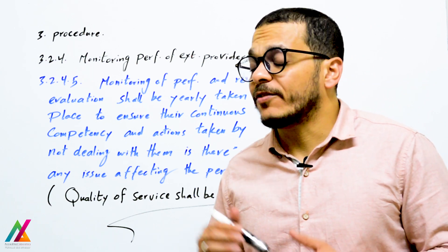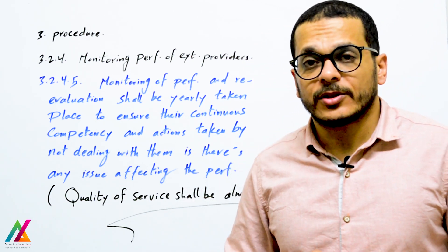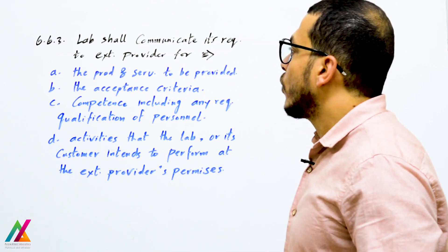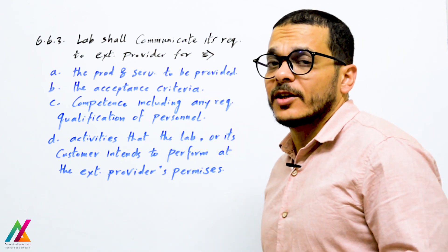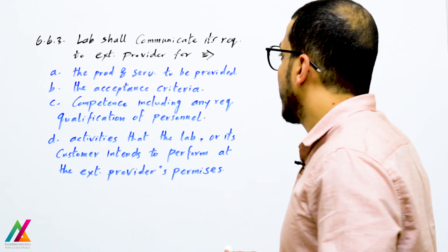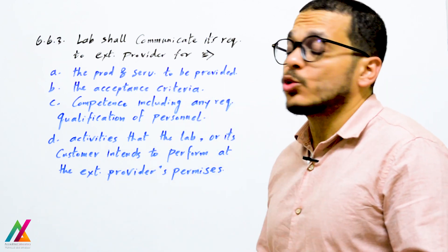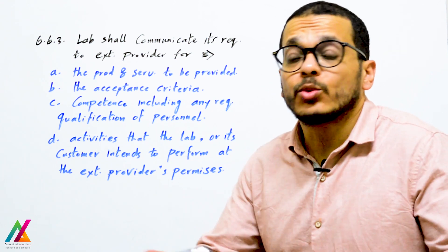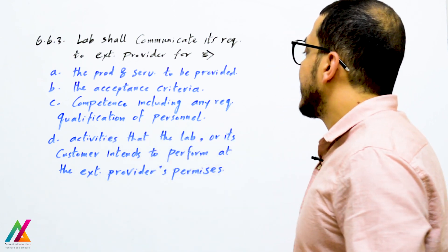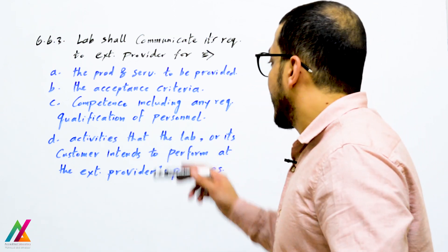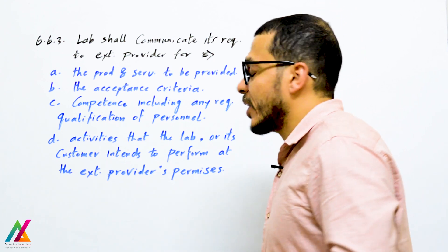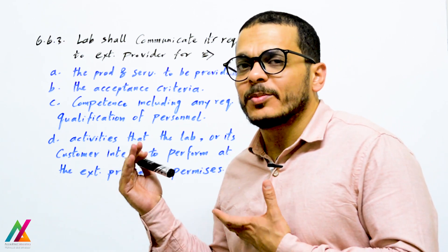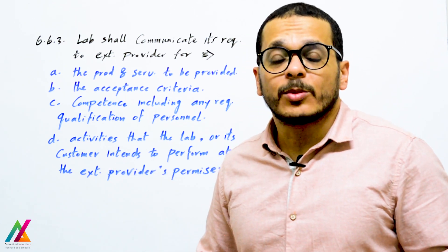The last requirement of this clause is that the lab shall communicate its requirements to the external provider for the product or service to be provided, including acceptance criteria and any required qualifications of personnel who will carry out the lab activities — including those that the lab or its customer intends to perform at the external provider's premises.